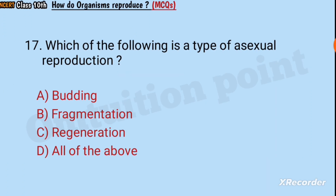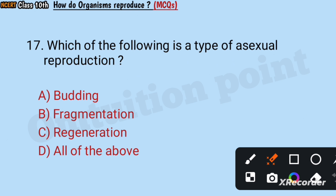Question number 17: Which of the following is a type of asexual reproduction? Budding, fragmentation, regeneration, or all of the above? Answer: All of the above.